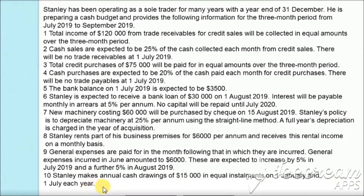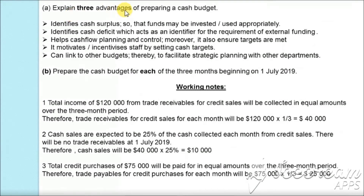In part (a) of the question, we are asked to state three advantages of making a cash budget. First, a cash budget helps the business to identify a cash surplus. If there is a cash surplus, it means the business is not investing its cash appropriately — there is cash lying idle in the business which can be invested, for example, for the payment of trade payables to obtain a discount for early payment.